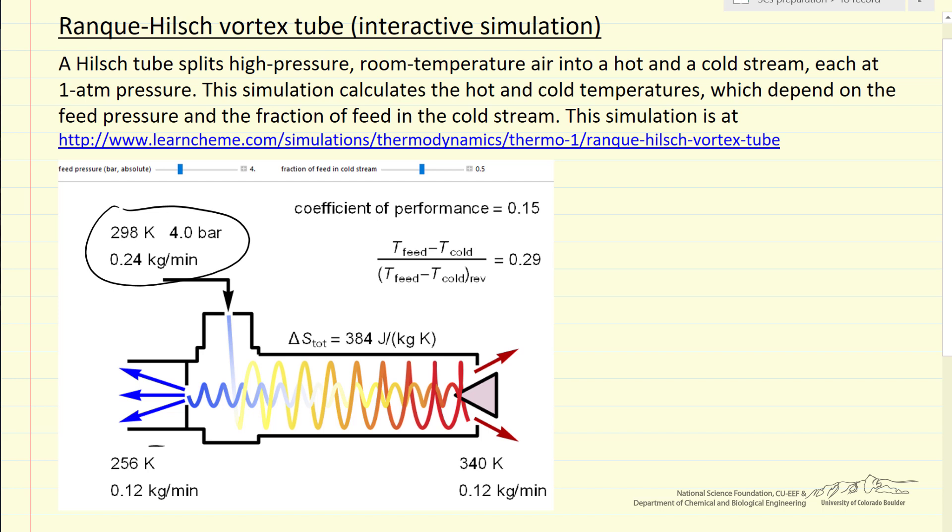and in a particular example here, half the air goes to the cold stream, half is going to the hot stream. This can be adjusted with this valve, which is controlled by this slider in the simulation. The colors try to approximately represent temperature in that colder temperatures are blue and then warmer temperatures end up being red.